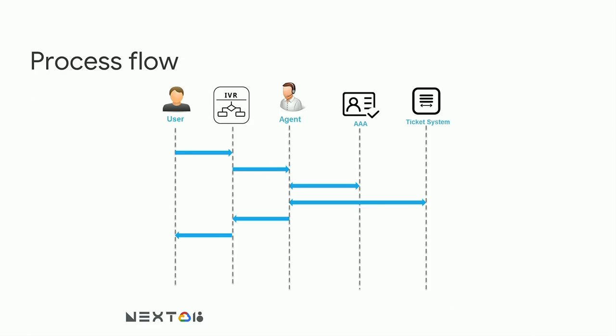Giving a view of the process flow itself: users across 3,000 stores call in for issues like a printer cartridge not working or a freezer being broken. That gets to the IVR system, which forwards it to a free agent. The agent listens, validates the user's request, understands the context, and provides the response — the user and the agent did most of the work.